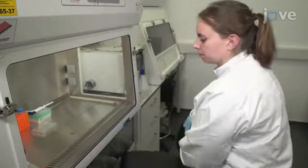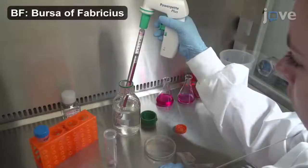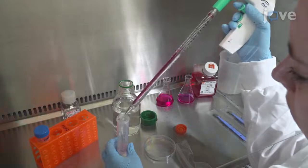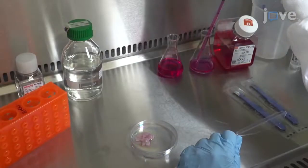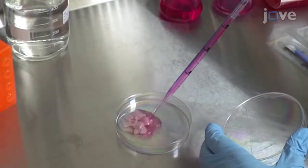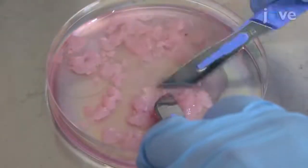In a microbiological safety cabinet, wash the BF in 30 milliliters of cold PBS at least three times. Transfer the washed tissue to a petri dish and add five milliliters of 1x collagenase D solution.